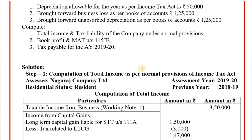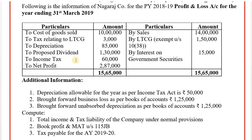Tax liability under normal provisions: Rs. 47,000 long-term capital gain liable for Securities Transaction Tax at 10% = Rs. 4,700. Tax on balance of total income: Rs. 4,12,000 minus Rs. 47,000 = Rs. 3,65,000 at 25% = Rs. 91,250. Total income tax: Rs. 95,950. Surcharge: nil (total income below Rs. 1 crore). Health and education cess at 4% = Rs. 3,838. Total tax liability as per normal provisions: Rs. 99,788.